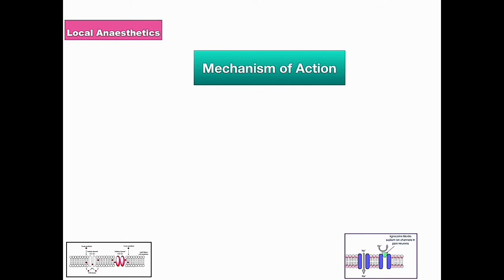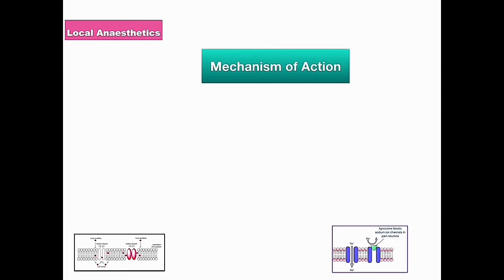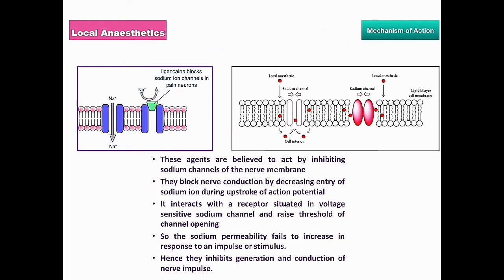Moving on to the mechanism of action of local anaesthetics. These agents are believed to act by inhibiting sodium channels of the nerve membrane. They block nerve conduction by decreasing the entry of sodium ions during the upstroke of the action potential. They interact with receptors situated in the voltage-sensitive sodium channel and raise the threshold of channel opening.